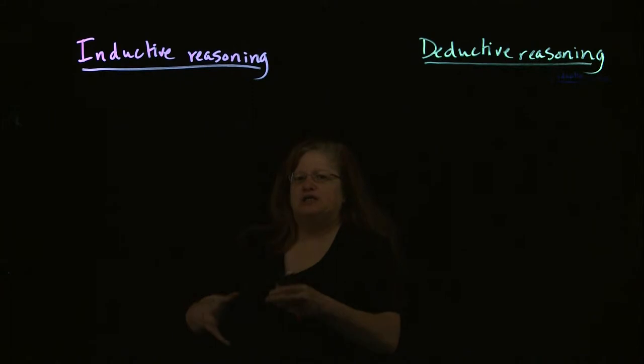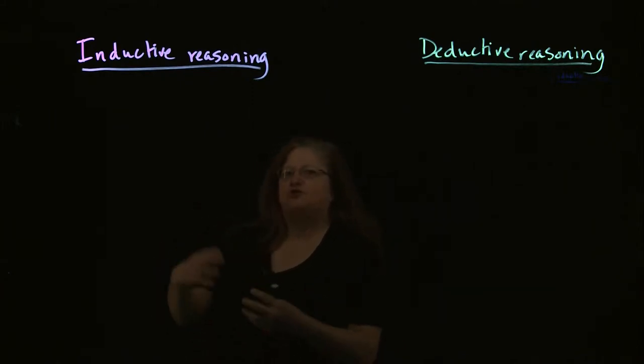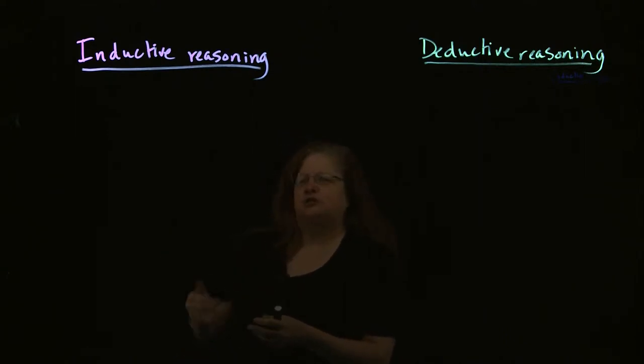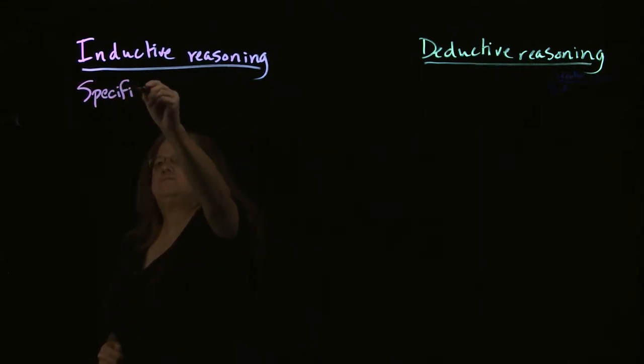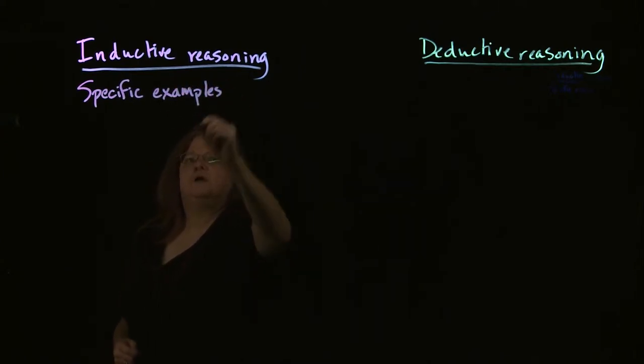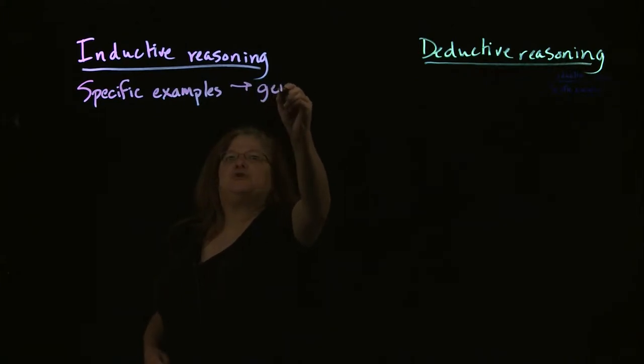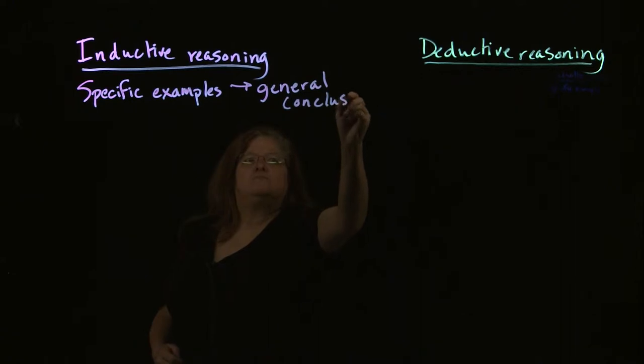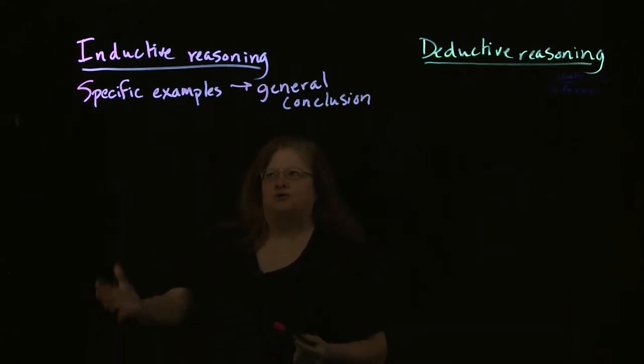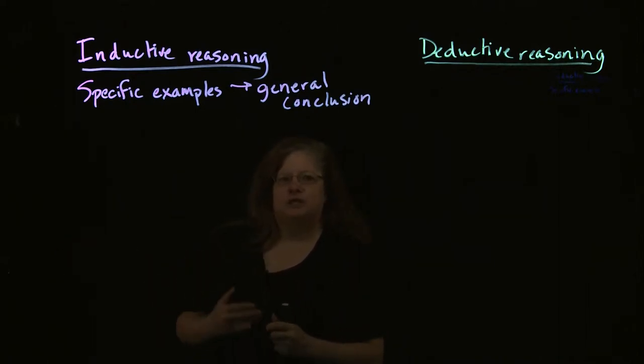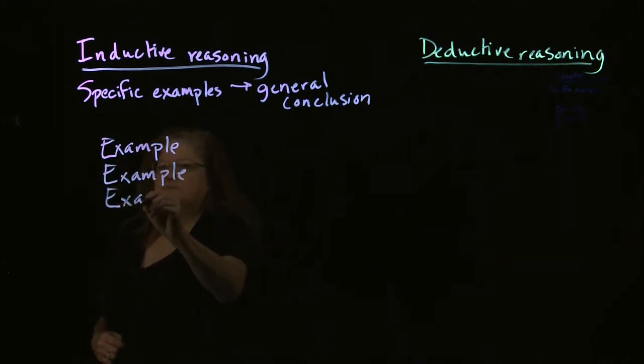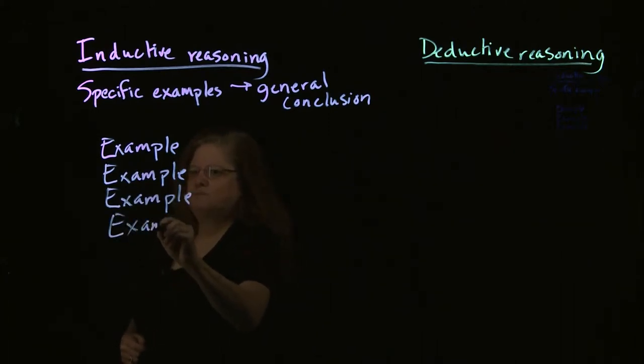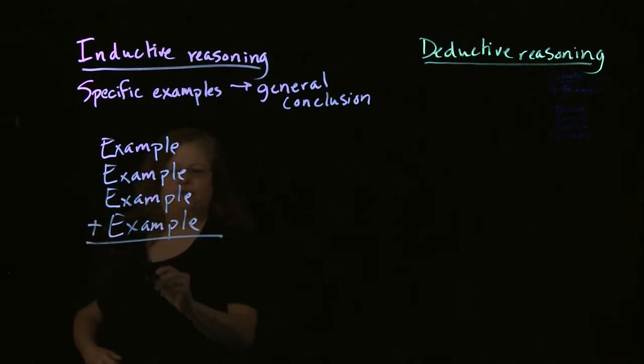Inductive reasoning is often characterized as moving from the specific to the general. When you're using inductive reasoning, you're starting with specific examples and you're putting those examples together to get a general conclusion. So the typical pattern of inductive reasoning is where the writer is going to present a bunch of examples of something and then basically add them together to come up with a conclusion.